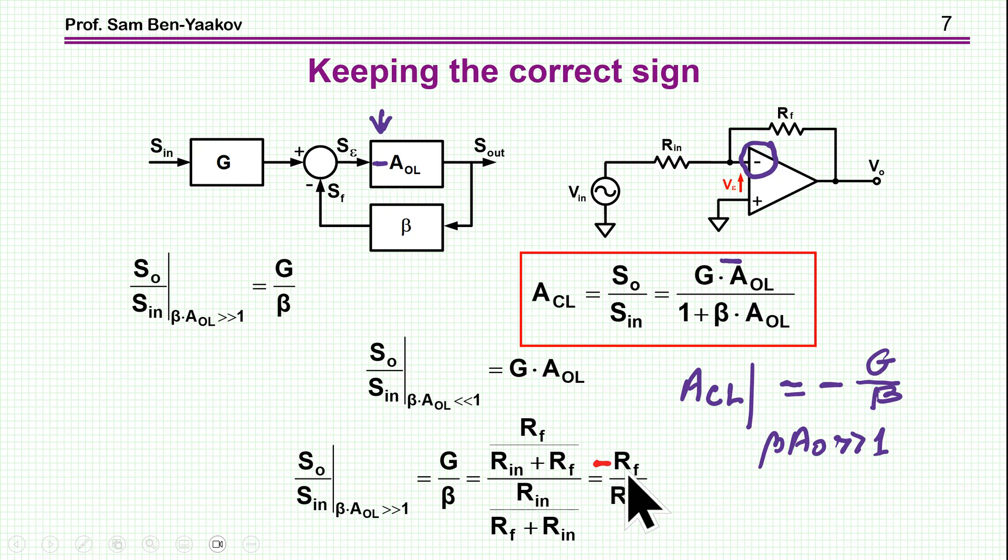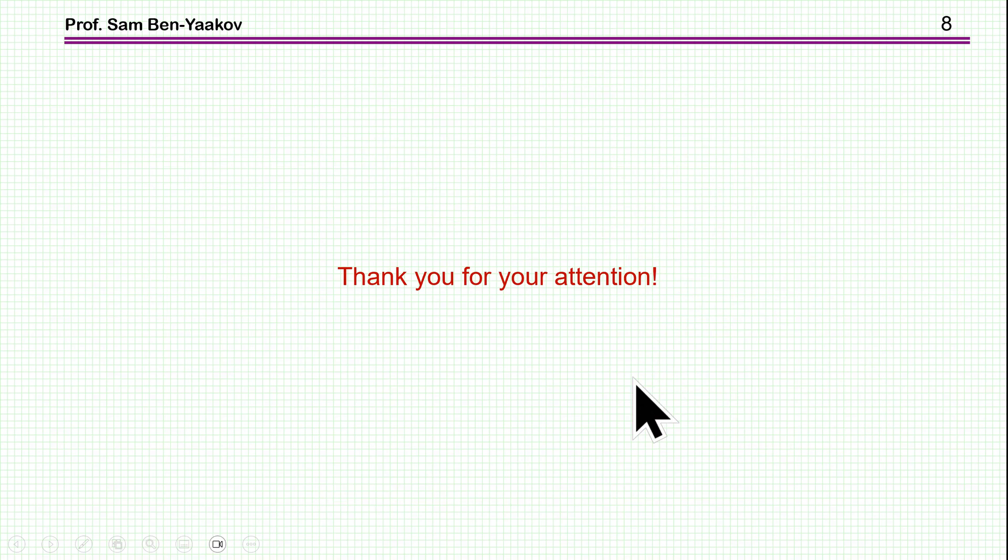So this is the whole story, and you can apply it, of course, to any system. The only thing you have to do is to find out what is G or beta in your particular case, and you are all set. And especially for beta A larger than 1, you get immediately the expression. Of course, this could be general impedances, could be active or passive components, etc. So this brings me to the end of this presentation. I hope you find it of interest, and perhaps it will be useful to you in the future. Thank you very much.